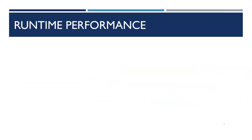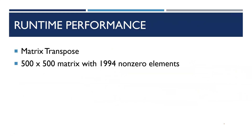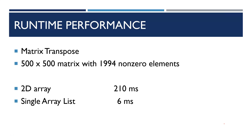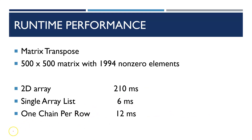Runtime performance also differs. For matrix transpose on a 500 cross 500 matrix: the 2D array takes 203 microseconds, the single array takes 6 microseconds, and the chain method takes 12 microseconds. Compared to the full sparse matrix, using these representations saves significant time. That is the power of different representations in the sparse matrix.